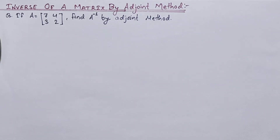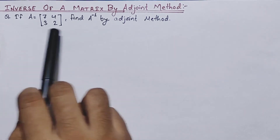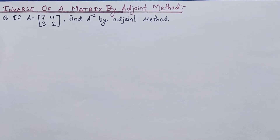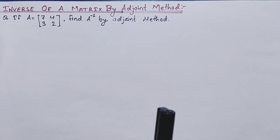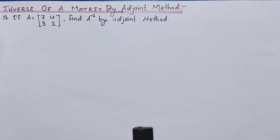Welcome back to Civil Learning Online. Today I am going to discuss the inverse of a matrix — how we can calculate it whether our matrix is a 2x2 or 3x3 square matrix. We are going to cover both one by one. In the previous video I discussed how to calculate the adjoint of a matrix, and now it's time to learn how to find the inverse. It is very easy if you know the adjoint, so without further delay let's get started.